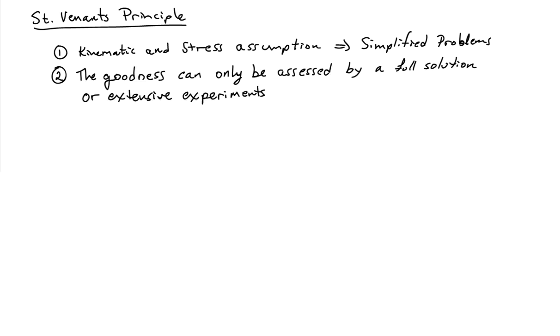So first of all, the assumptions that we make can only really be assessed by looking at a full set of solutions to the complete equations, and that can be quite difficult to do, or engaging in very extensive experimental work. So this is rather difficult, but there are some things that we can understand even without that, and this is something that will lead to something known as Saint-Venant's Principle.